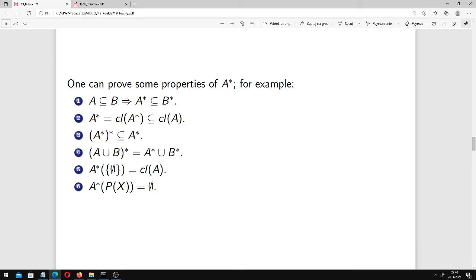In this case, if our ideal is singleton of empty set, if it contains only empty set, then A star with respect to this ideal is just closure of A. But this has been already said a few minutes ago, as you remember. If our ideal is the whole power set of X, then A star is empty.